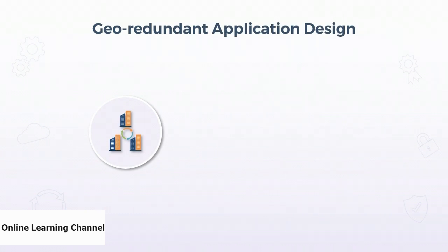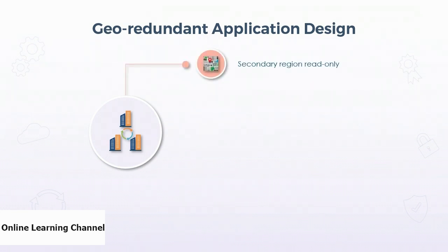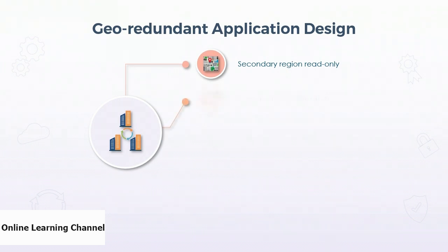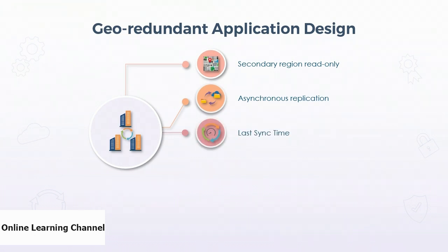Applications utilizing geo-redundancy for continued operations can use Azure geo-redundant storage for their data storage. However, data in the secondary region is in a read-only state until a failover is initiated, ensuring temporary outages do not result in split data situations. Applications can be designed to flip to a read-only mode to continue serving data without compromising consistency. Data is replicated asynchronously between regions, so caching and data fetches may be affected. The last sync time attribute indicates when the last replication took place, helping ensure data consistency when services resume after an outage.